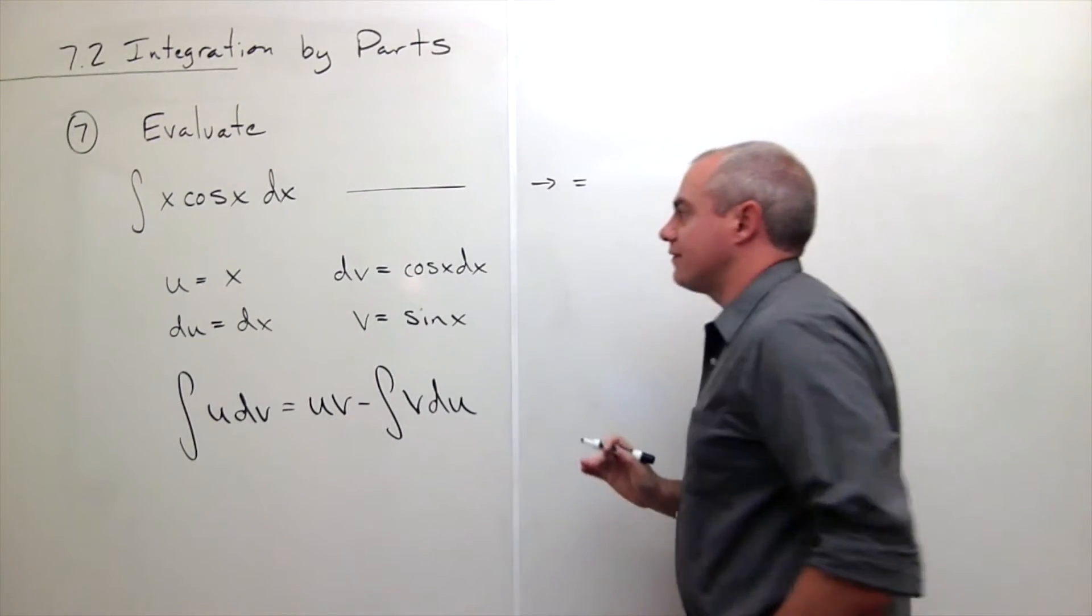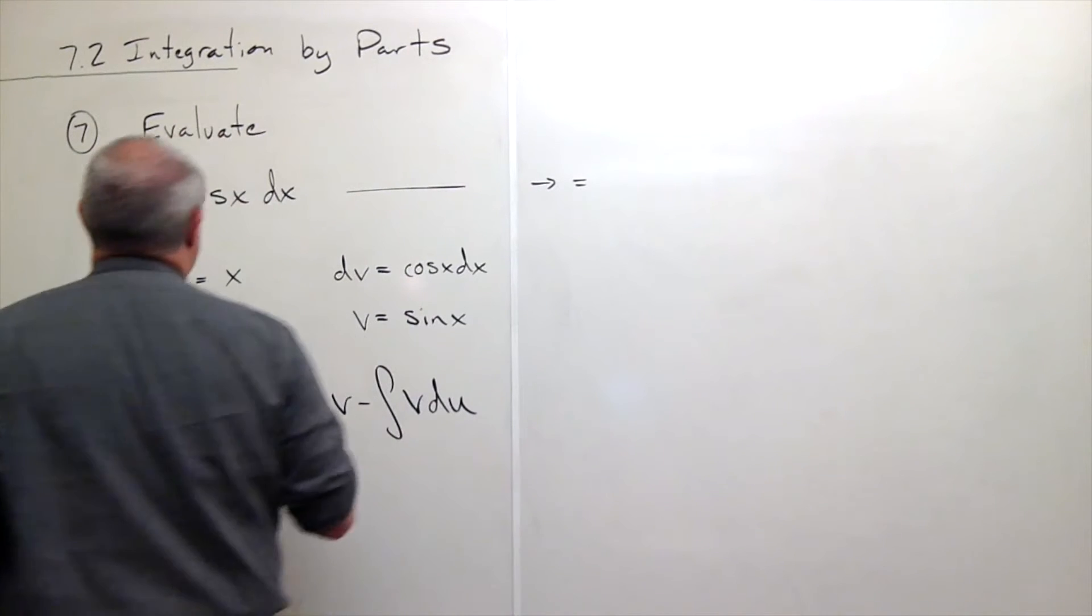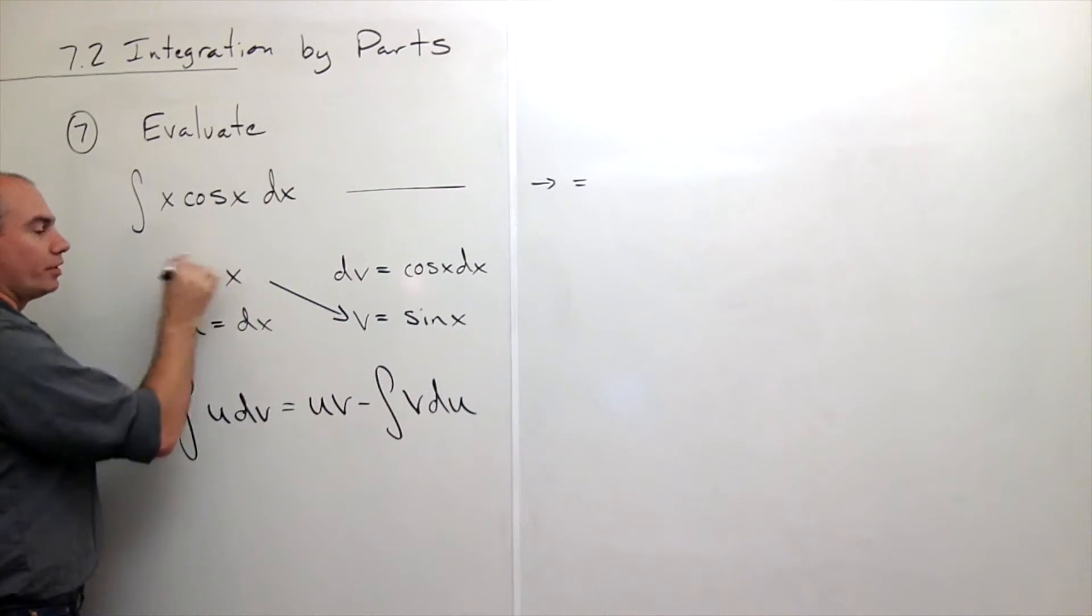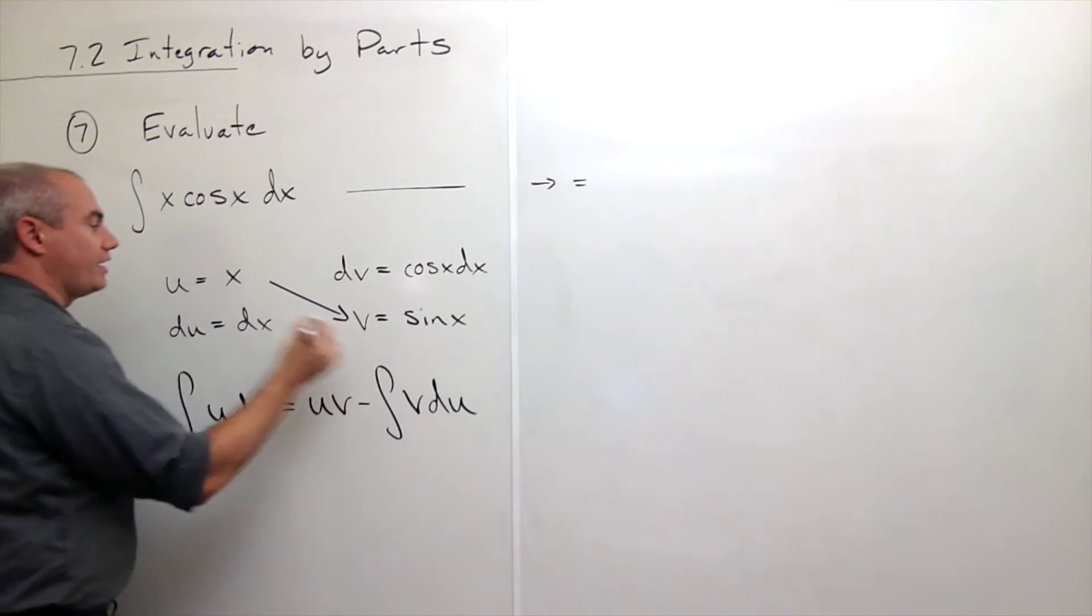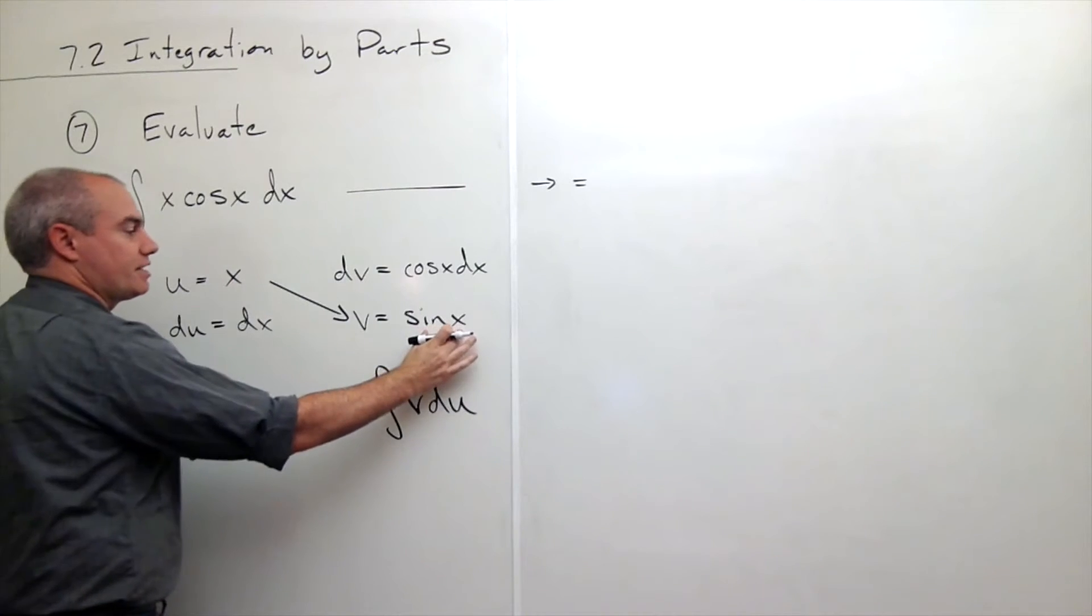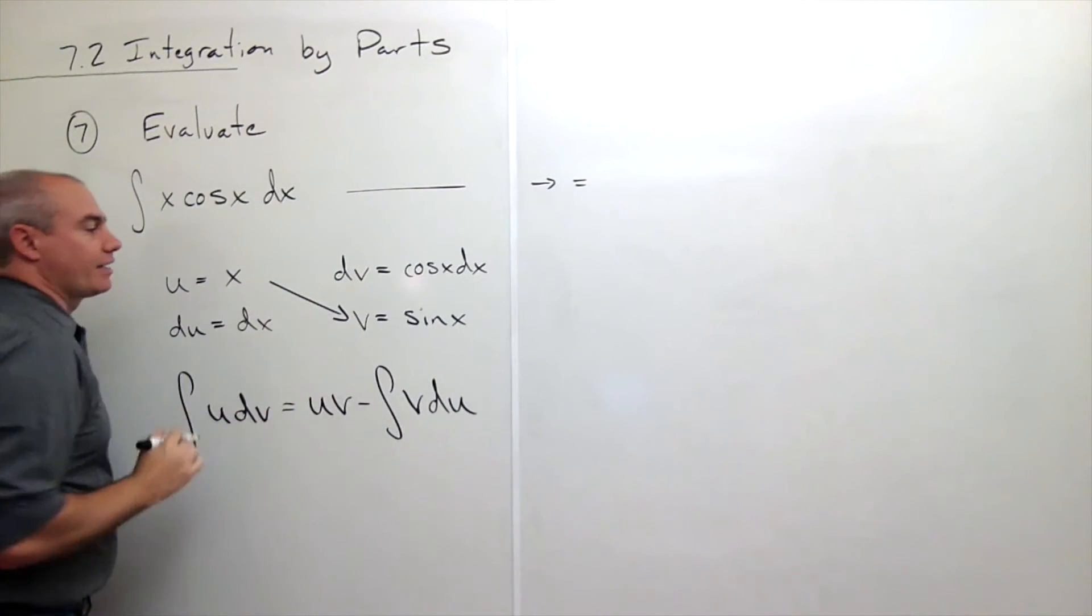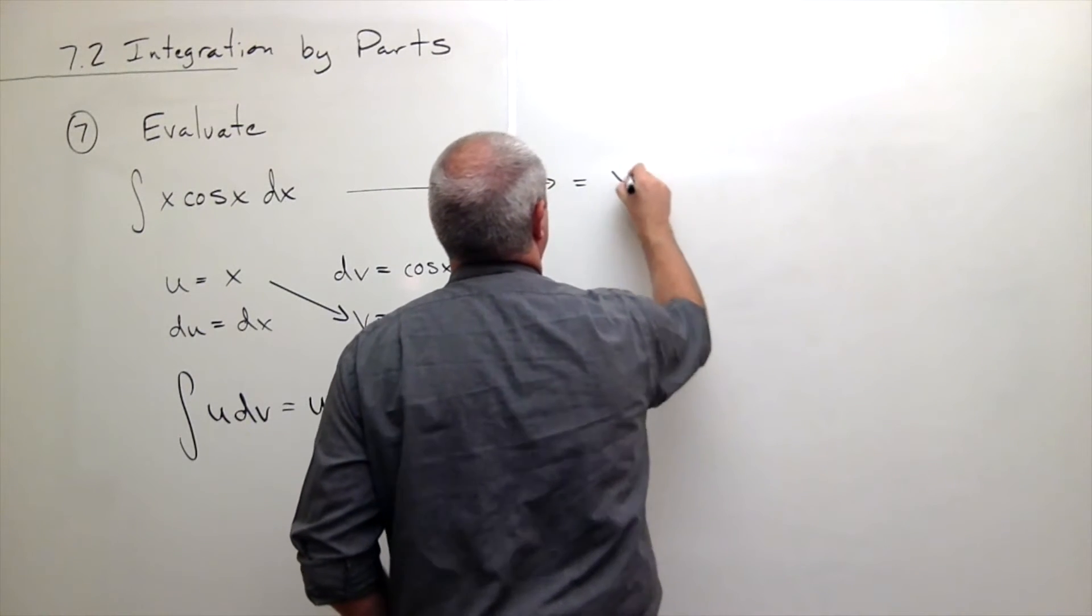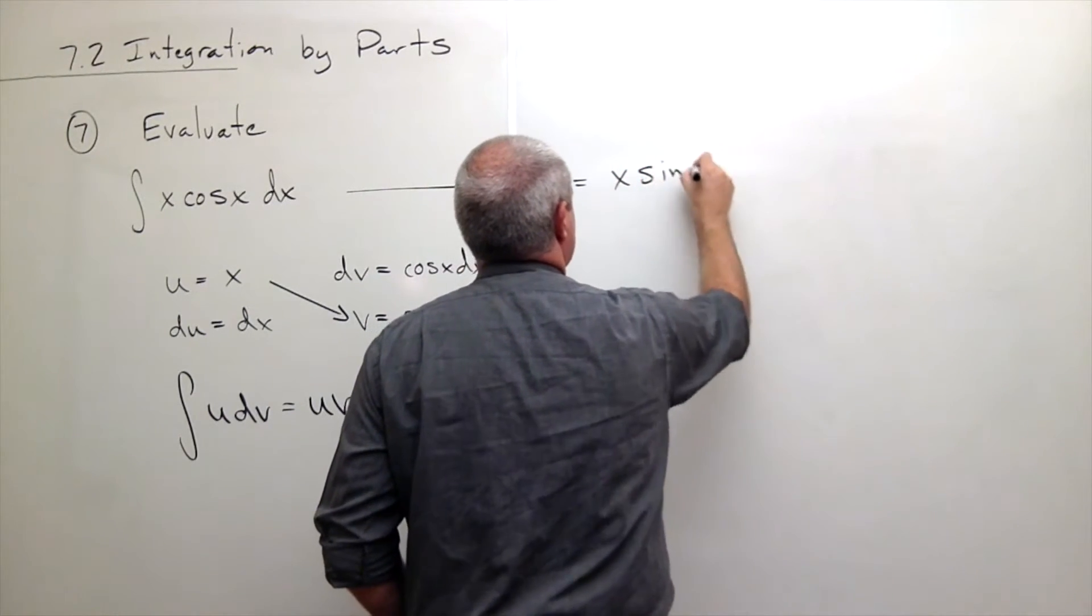It's u times v. So what I always do is I just draw a little arrow right here from the upper left to the bottom right, just to remember, okay, I'm going to take this thing times this thing. So I draw in this diagonal arrow. So I have x times sine of x, x sine of x.